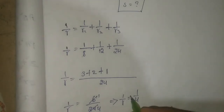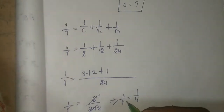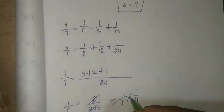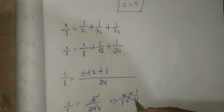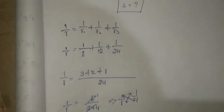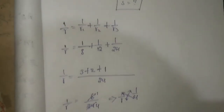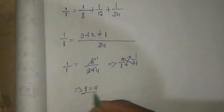By cross multiplication, R value is 4. So R value is 4.